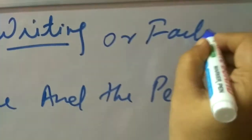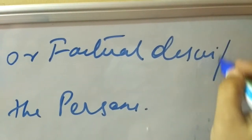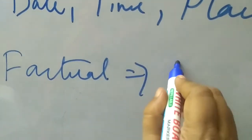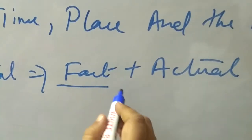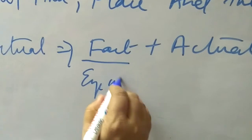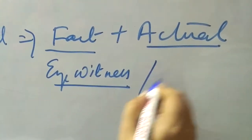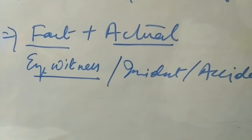First of all, report writing is otherwise also known as factual description. Factual description equals fact plus actual. What is fact? Fact is the real event which you have seen with your own eyes — you are the eyewitness. That is the fact which you have actually seen with your own eyes, and you are the eyewitness of that incident or accident.